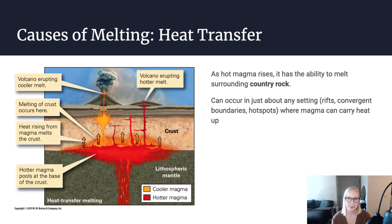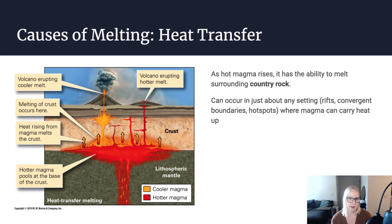The last cause of melting is heat transfer, and this one's probably the easiest to wrap your head around. As hot magma rises through the lithosphere, it has the ability to heat the surrounding country rock. This type of melting can occur in just about any tectonic setting — in rifts, at convergent boundaries like subduction zones, and at hot spots. Anywhere magma can carry heat up through the crust, you can get this heat transfer melting.